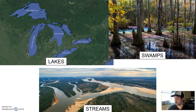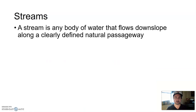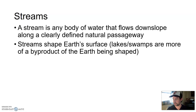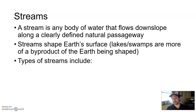A stream is any body of water that flows downslope along a clearly defined natural passageway. Streams shape the earth's surface — lakes and swamps are more a byproduct of the earth being shaped — but streams and that moving water tends to shape the earth's surface, so streams have more of a role in geology.